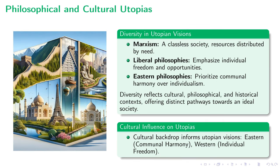As we delve into utopian visions, philosophical perspectives take center stage. Marxism, for instance, conjures an ideal society as classless, emphasizing resource distribution based on individual needs. Contrast this with liberal philosophies that lay stress on individual freedoms and opportunities, painting a vastly different utopian landscape. Eastern philosophies add another dimension by championing communal harmony over individualism. No two visions are alike, signifying the varied pathways towards utopia shaped by different philosophical frameworks.